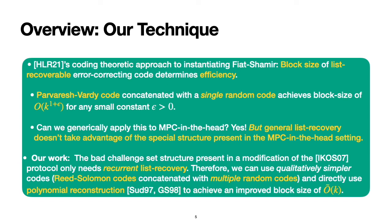Therefore, we can use qualitatively simpler codes to instantiate recurrent list recovery, namely Reed-Solomon codes concatenated with multiple random codes, and directly use the polynomial reconstruction algorithm given by Sudan97 and Guruswami-Sudan98 to achieve an improved block size of quasi-linear in the security parameter k.